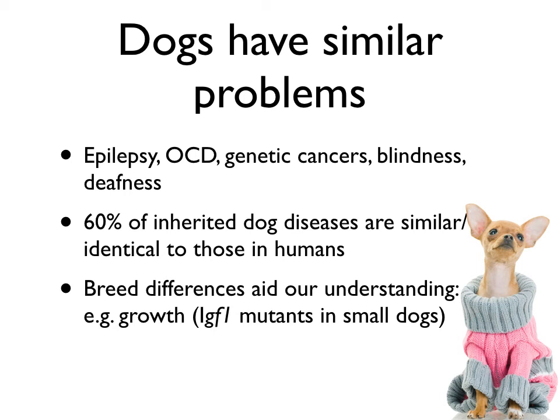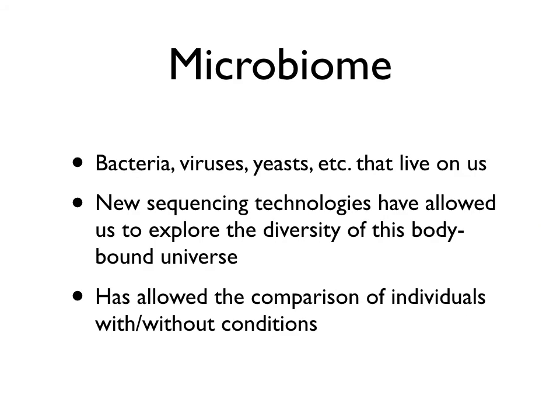Dogs are great study systems because they share many of the same issues we want to treat in humans — epilepsy, OCD, genetic cancers, blindness, deafness — many of these genetically caused maladies occur in dogs just as in humans. For example, the reason we have miniature dogs like Chihuahuas is a mutation in the IGF1 gene that affects growth rate and bone deposition. This gene serves the same role in our own bodies.